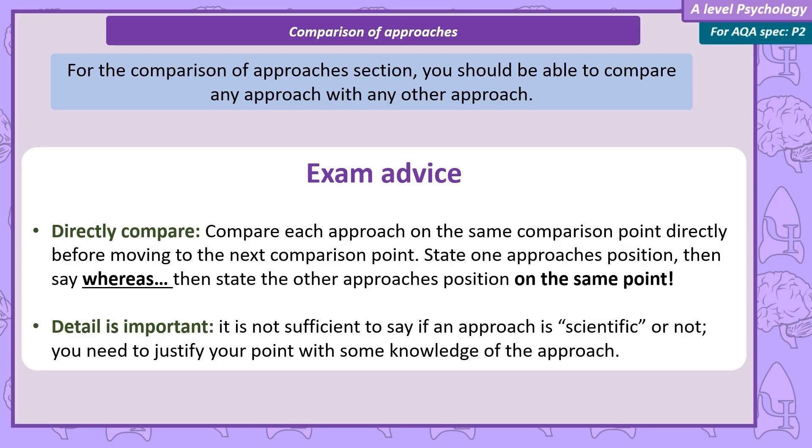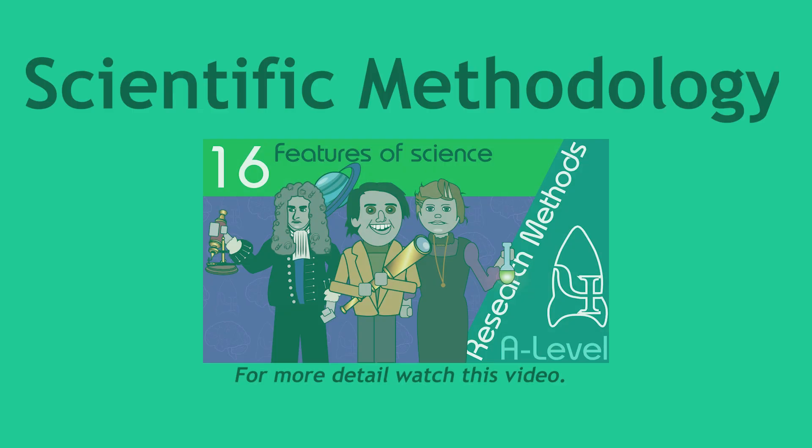For example, I won't just say the biological approach is scientific — I'll give more detail by explaining how exactly it is scientific, such as the use of objective measuring devices like fMRIs and genetic tests.